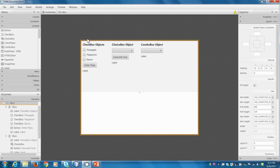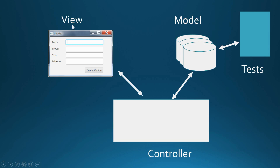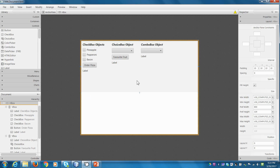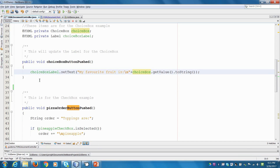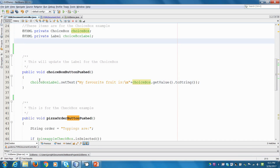Now I'm going to go back into our controller. Big picture: we just updated our view, now we're going to go into our controller, add labels for the elements we just added so we can access them, and then put in a method so that when the combo box changes we update our label. First we'll add in some instance variables to control things.